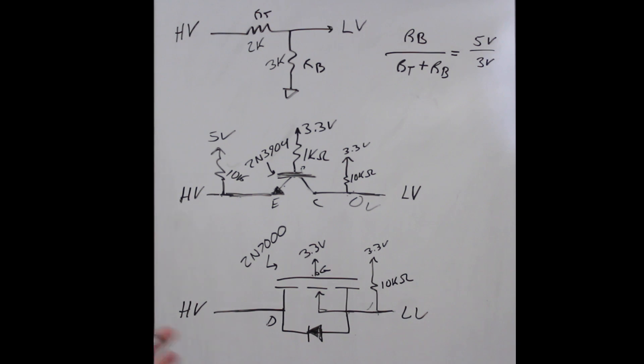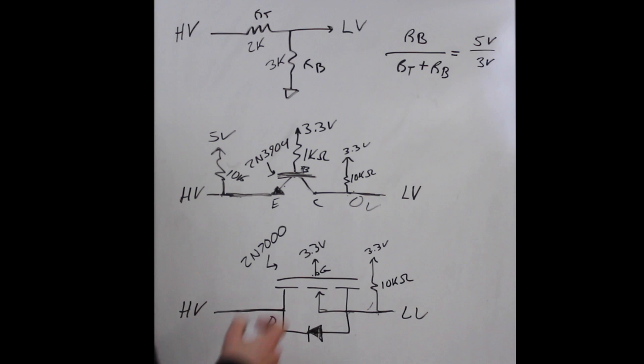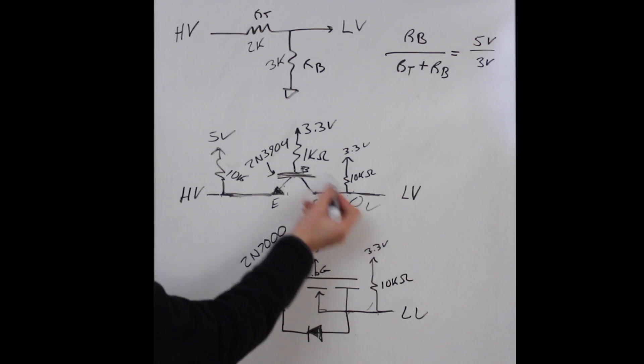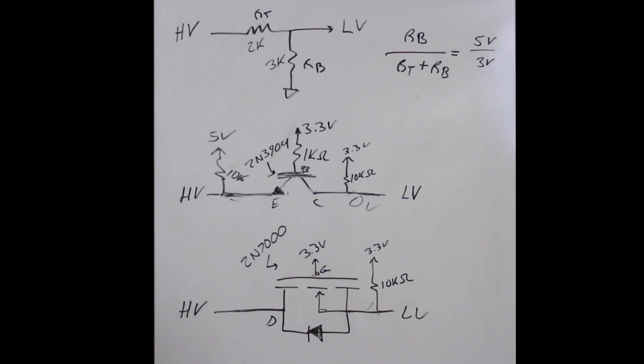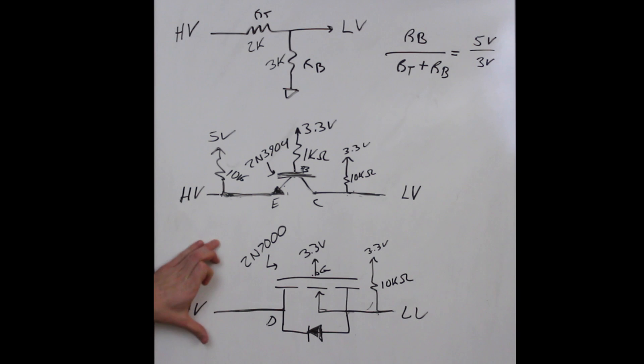As soon as we go low here, we've created a VBC junction, which is kind of interesting. You don't really see transistors used like this. I think this mode of operation is called reverse active mode, where you're turning it on by making VBC forward biased. This actually turns on and creates collector current to drive this point low.